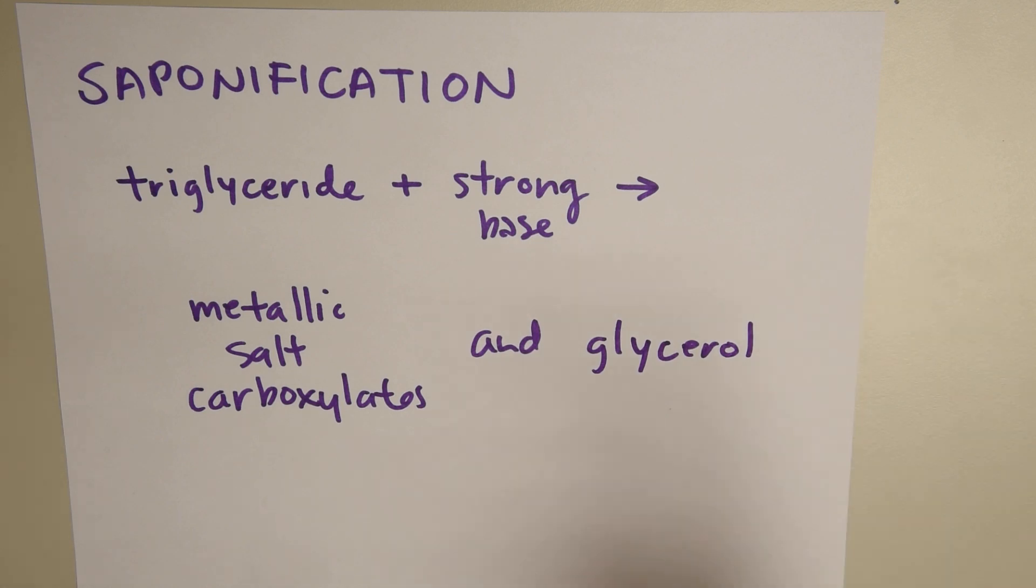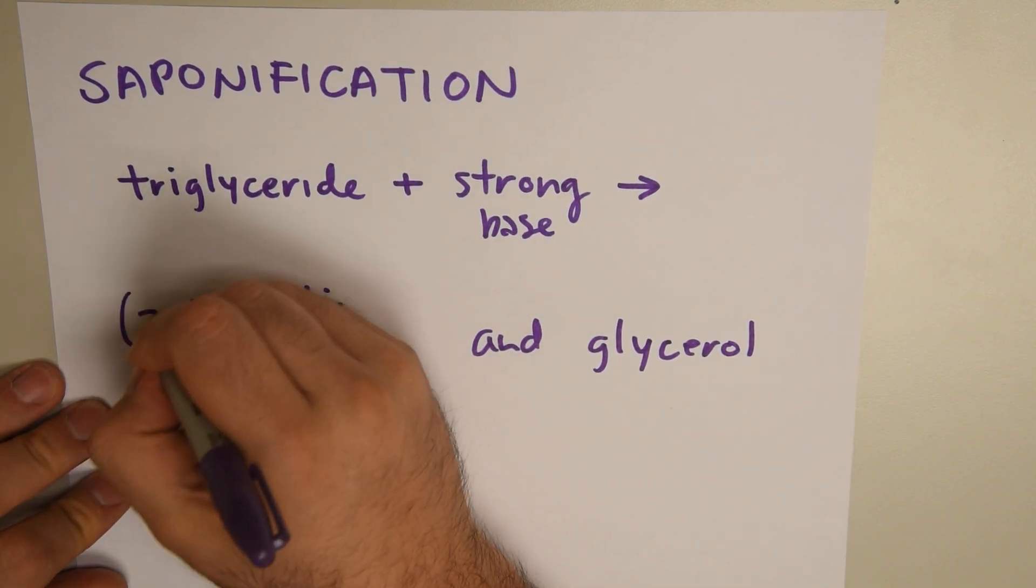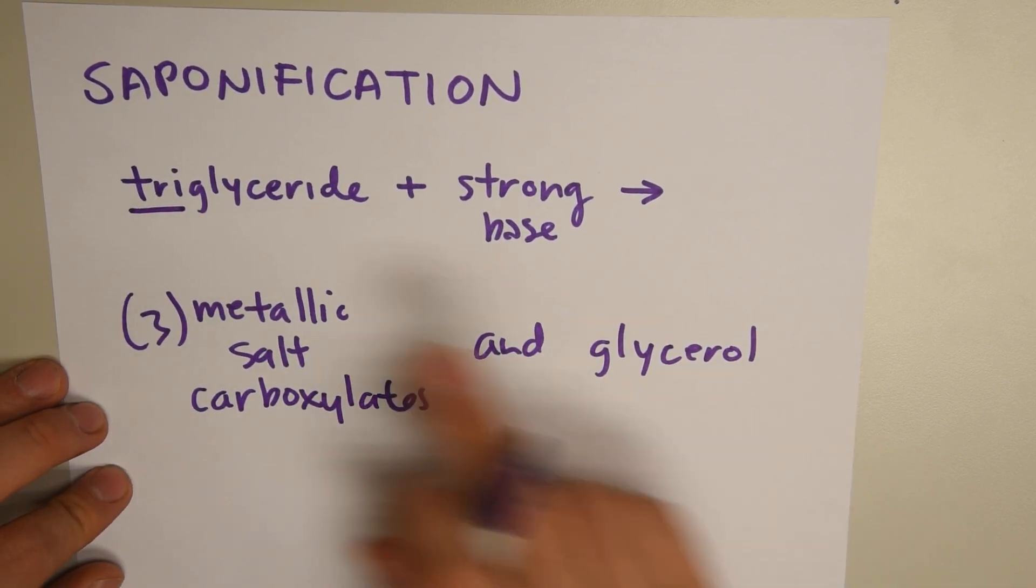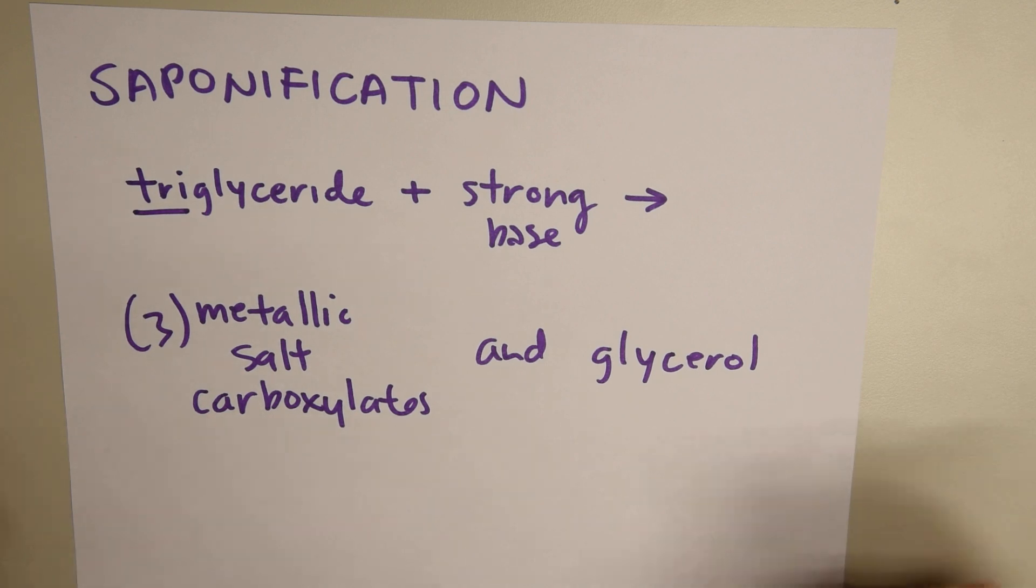The first is metallic salts or carboxylates and glycerol. So this is the basis: triglyceride plus strong base equals metallic salts. How many? Three, because we have three from the triglyceride, and glycerol, which is the basic molecule of the original triglyceride.